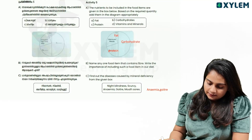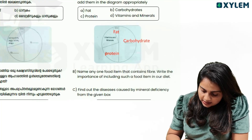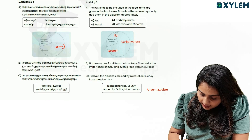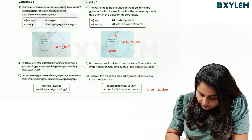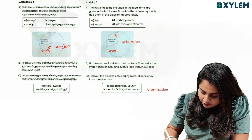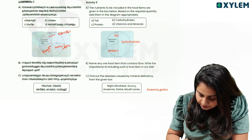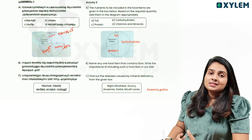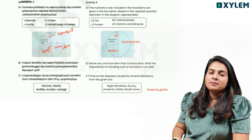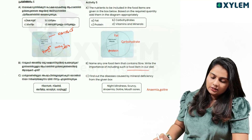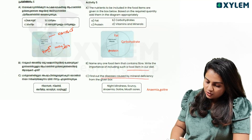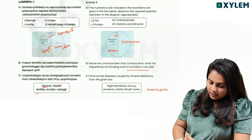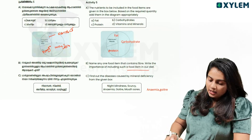The first thing is carbohydrate. What is carbohydrate? Carbohydrate is a product. We also have protein, we also have fat, we also have fiber. Fiber is not a food item. Find out the diseases caused by mineral deficiency — mineral deficiency diseases include scurvy, anemia, and goiter.